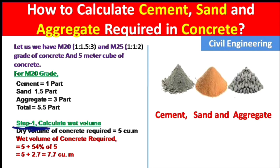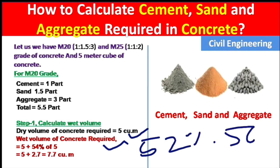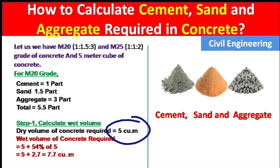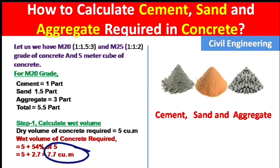Now let us go through the steps to calculate the ingredients required. Step 1: calculate the wet volume of concrete. The required amount of concrete always exists in dry volume, so we need to convert it into wet volume. To convert dry volume into wet volume, we add 52% to 56% to the dry volume. So if we have 5 cubic meters of concrete, I am adding 54% of 5, which gives 2.7, and 2.7 + 5 = 7.7 cubic meters.